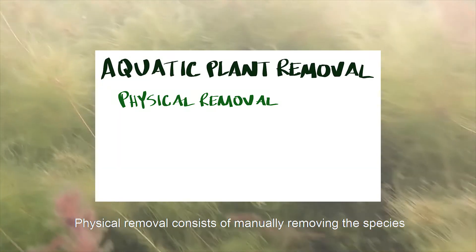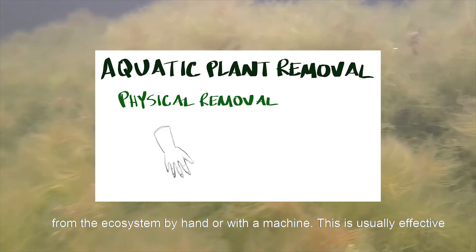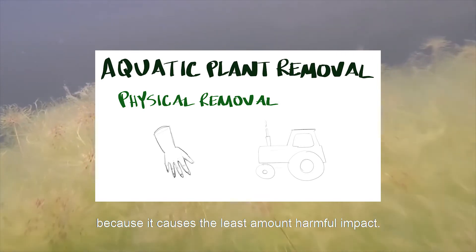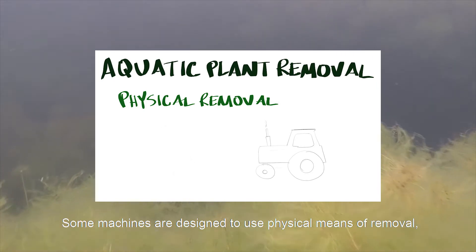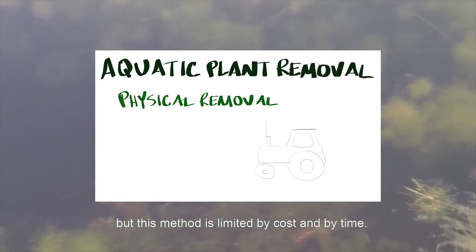Physical removal consists of manually removing the species from the ecosystem by hand or with a machine. This is usually effective because it causes the least amount of harmful impact. Some machines are designed to use physical means of removal, but this method is limited by cost and by time.